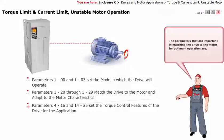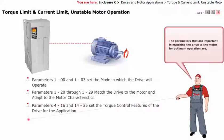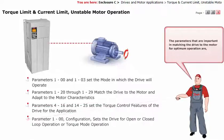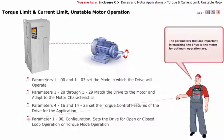Parameters 416 and 1425 set the torque control features of the drive for the application. Parameter 100, configuration, sets the drive for open or closed loop operation, or torque mode operation.